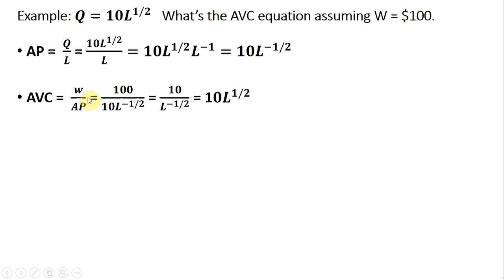Average variable cost, as we proved in the last screen, was the wage divided by the average product of labor. The wage is given at $100. The average product of labor we just found.